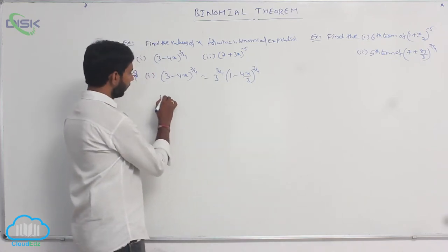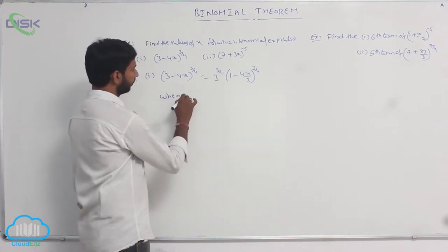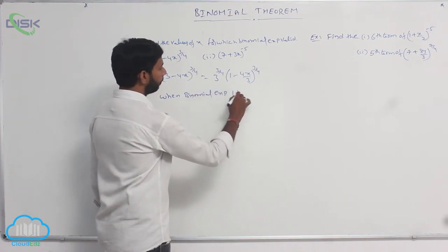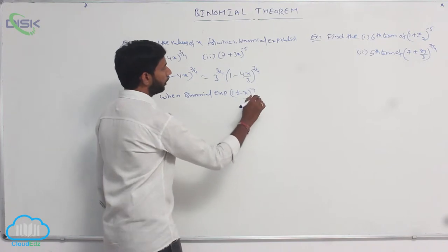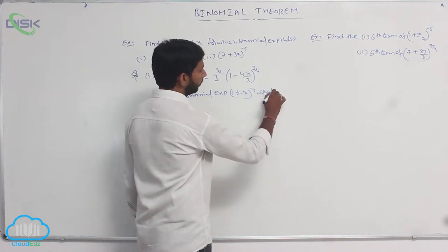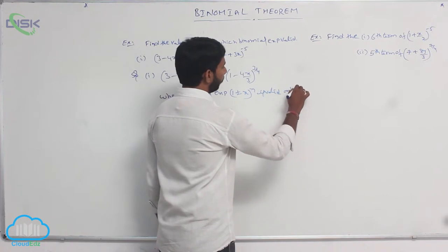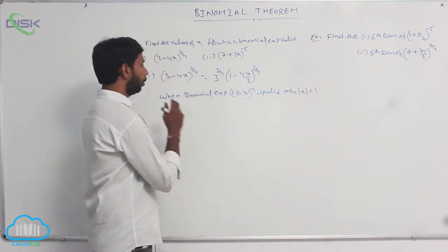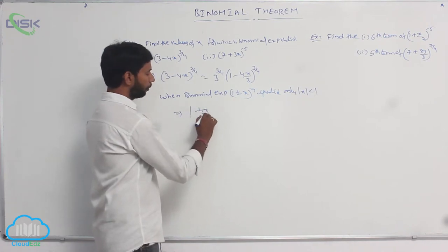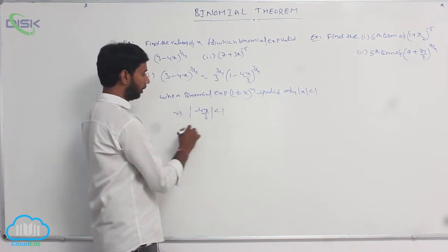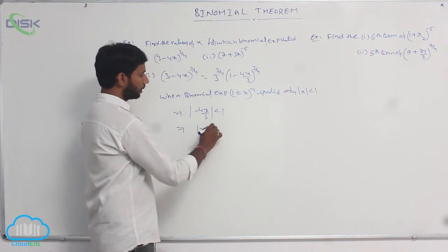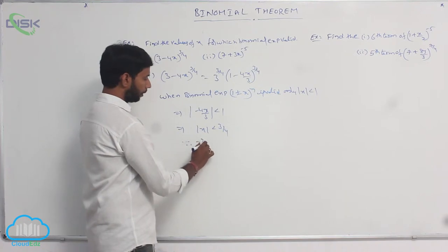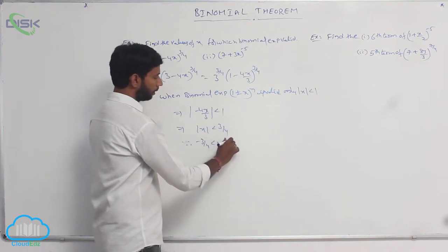The binomial expansion (1 ± x)^n is valid only when mod x is less than 1. Here, mod of (−4x/3) is less than 1, which implies mod x is less than 3/4. Therefore, −3/4 < x < 3/4.